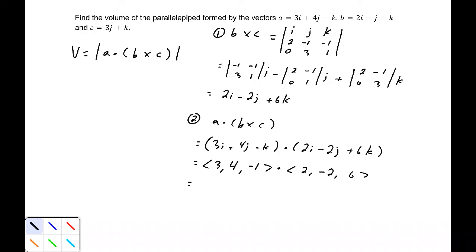Now we're multiplying some components here. So 3 times 2 plus 4 times -2 plus -1 times 6. And that should be 3 times 2 is 6, 4 times -2 is -8, and -1 times 6 is -6. So this should be -8.